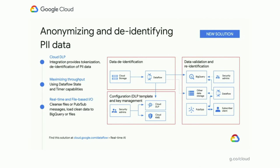In our next solution, we allow customers to anonymize and de-identify PII data, integrating with Cloud DLP — Google Cloud's service for anonymizing PII data, which also provides tokenization, de-identification, and other services. Dataflow is used here to maximize the throughput of the Cloud DLP API, using its state and timer capabilities to smartly batch calls to Cloud DLP and use your resources efficiently. You can use file sources or real-time sources, and clean data can be stored in a variety of outputs including BigQuery, Pub/Sub, Cloud Storage, and others. This solution is available on our website.